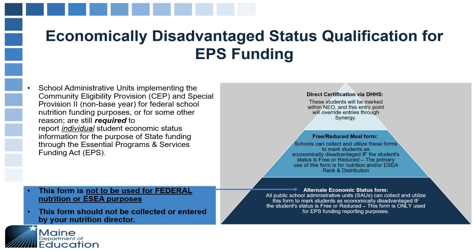For EPS purposes, we're collecting data on a specific date: October 1. What is the student's situation — where are they located, where are they attending, who's responsible for subsidy, are they special ed, are they English learners, are they economically disadvantaged as of October 1? That's the only date EPS needs. The data we pull for EPS calculations is only as of October 1, period.